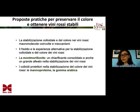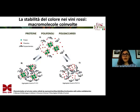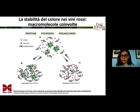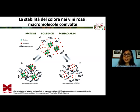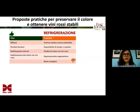We will talk about Montmorillonite and we will talk about manoproteins and gum arabic as protector colloids. Here you see the slide that Professor Bosso showed in relation to the interaction between the macromolecules involved in colloidal equilibrium, taken from work by Professor Marangon. I would like only to remind you that this colloidal equilibrium is a very subtle, delicate one, and we have the involvement of proteins, polyphenols and polysaccharides, which can be of endogenous or exogenous origin if they are added.